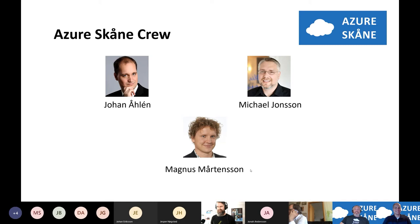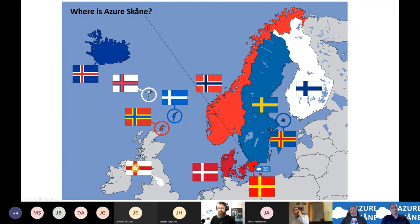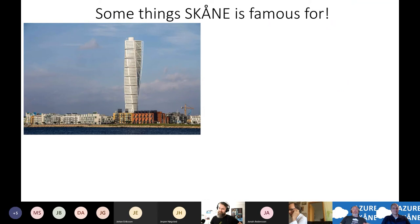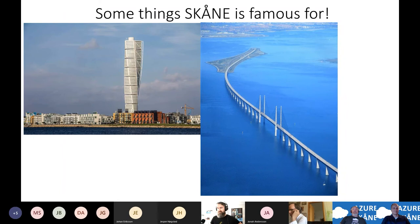Just quickly, since we are joined by people not only present in Skåne in the southern part of Sweden — here is a small picture so now you know where we're based. It's the small red dot here; it should be moved a little bit closer to Denmark. If you want to know what Skåne is famous for, we have a pretty cool building, the Turning Torso. We have an awesome bridge connecting us to Denmark, and it actually goes underwater for three kilometers.